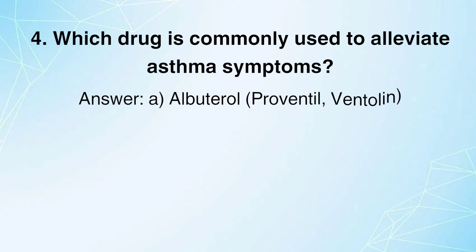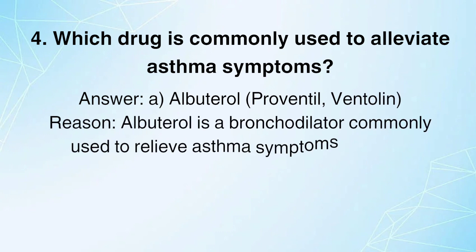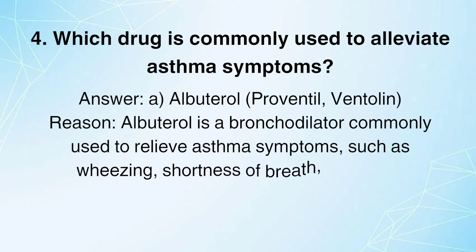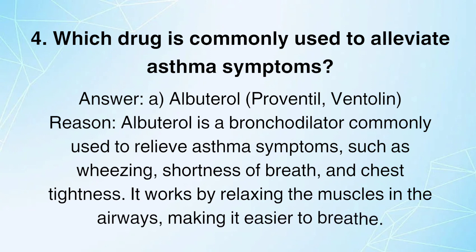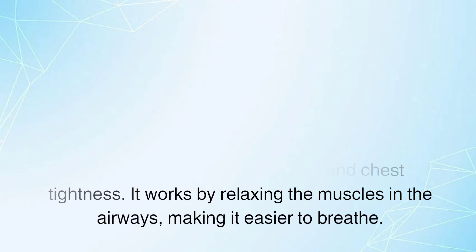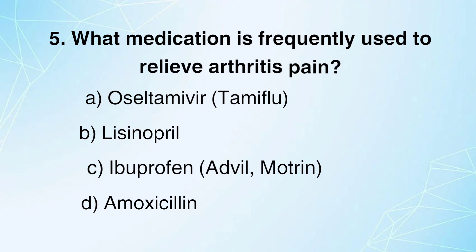Albuterol (Proventil, Ventolin). Reason: Albuterol is a bronchodilator commonly used to relieve asthma symptoms such as wheezing, shortness of breath, and chest tightness. It works by relaxing the muscles in the airways, making it easier to breathe.